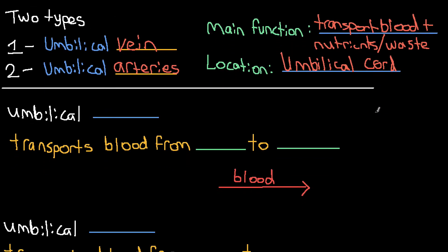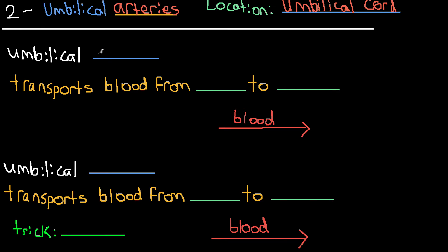Let's give a brief summary of each one. Starting with the umbilical vein. The umbilical vein transports blood from the placenta to the fetus. So just to recap, we're starting with the placenta and that blood is going to go in the direction of the fetus. The fetus only has one umbilical vein.